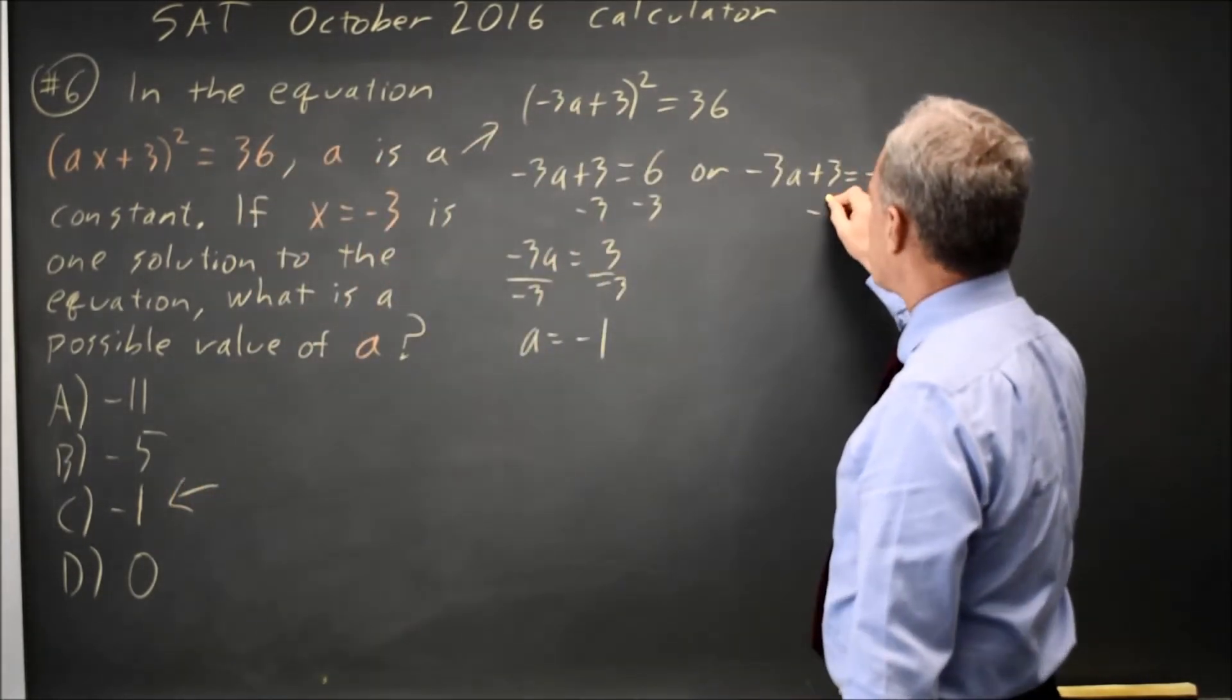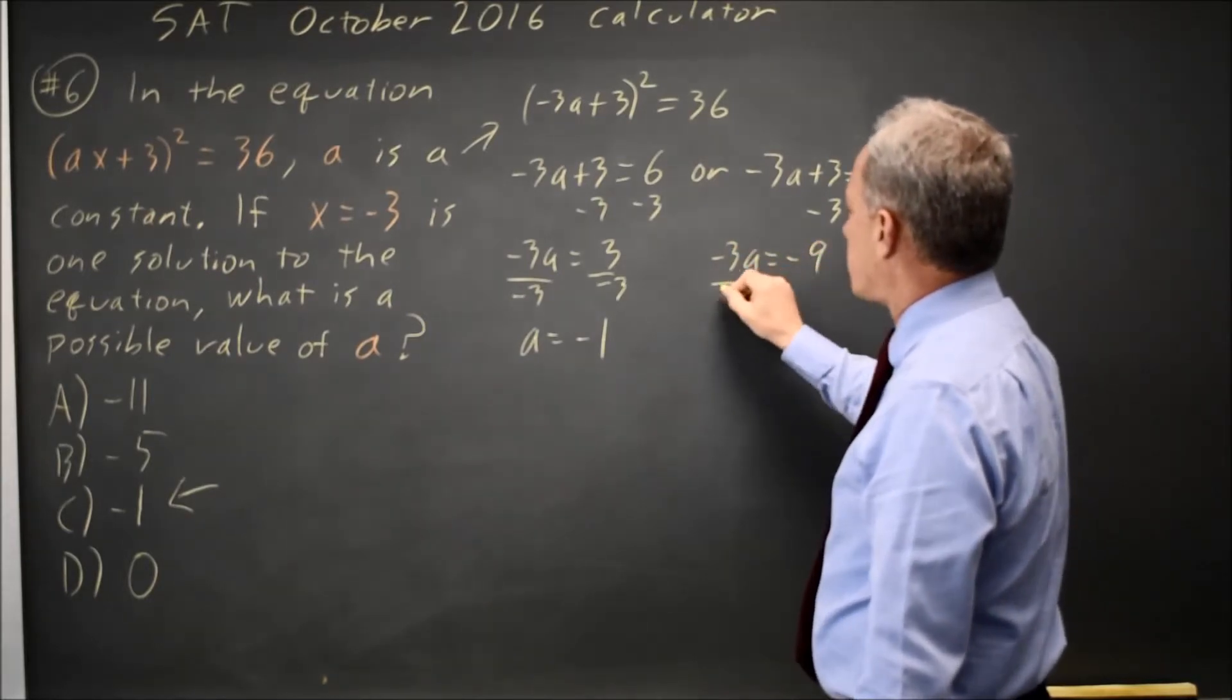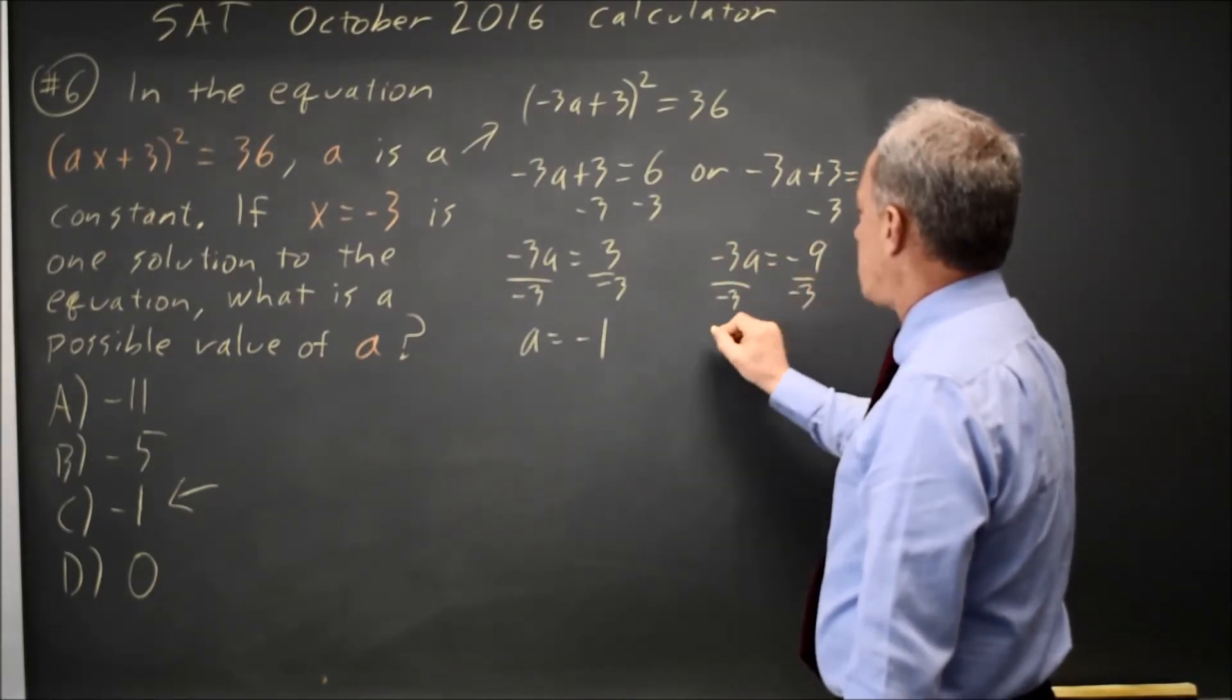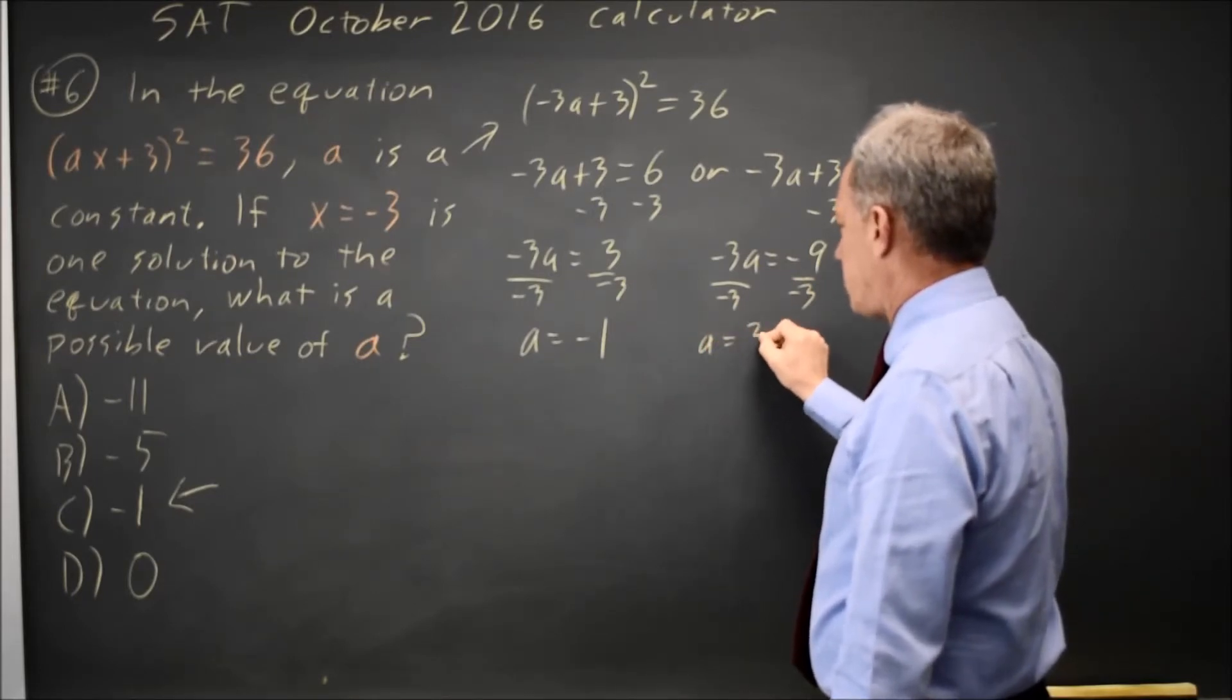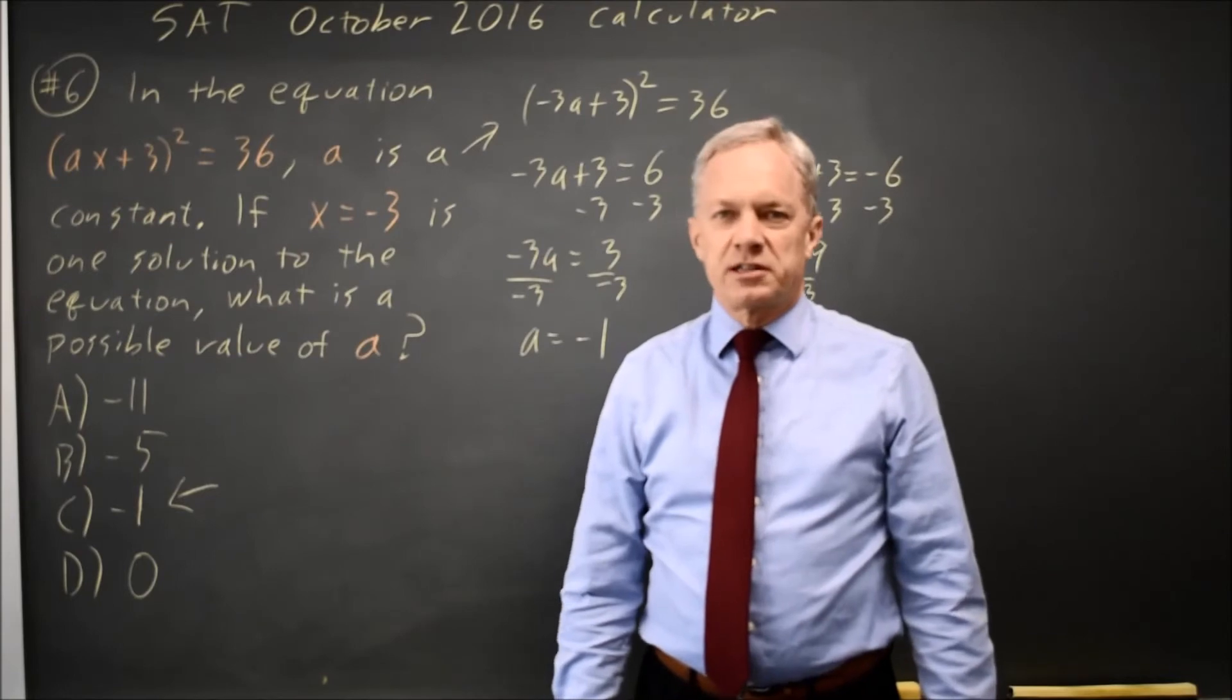Over here, if I subtract 3 from both sides, I get negative 3a equals negative 9. Divide by negative 3, a equals positive 3, which is not one of our answer choices, so the correct answer here would be C.